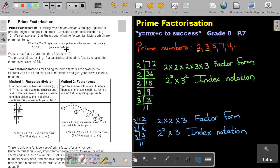But we say that 2 and 3 are the prime factors of 12. So the prime factors of 12 is just what prime numbers did you use. But the process of expressing 12 as the product of its prime factors is called prime factorization of 12.